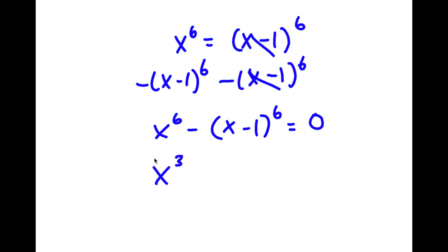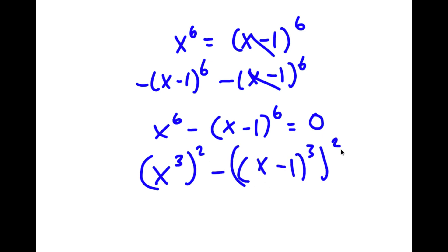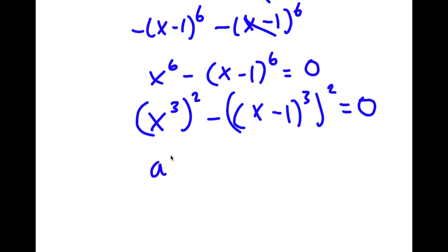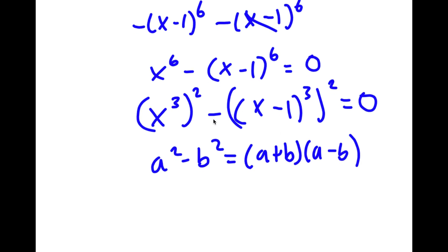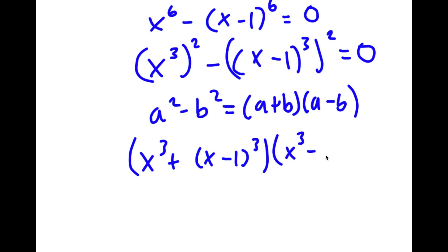Now I'm going to rewrite this as x to the power of 3, squared, minus x minus 1 to the power of 3, squared, equals 0. And if I have something in the form a squared minus b squared, this is equal to a plus b times a minus b. So in this case this equals x to the power of 3 plus x minus 1 to the power of 3, times x to the power of 3 minus x minus 1 to the power of 3, equals 0.